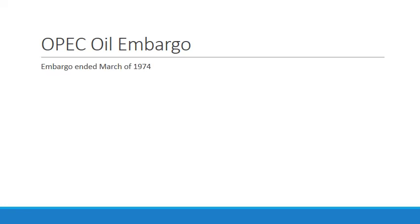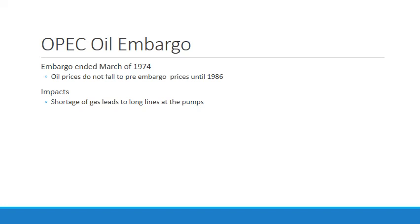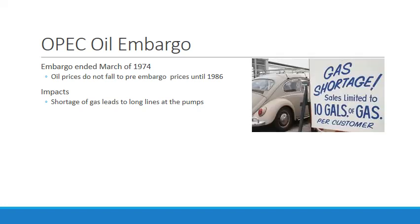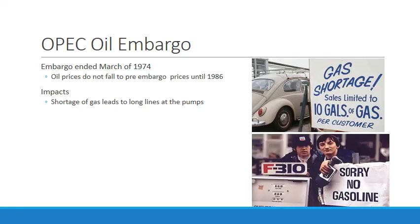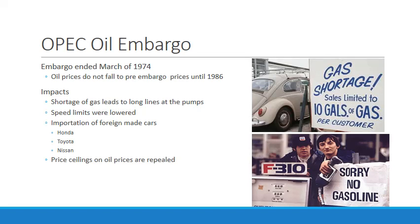The embargo ended in March of 1974, but oil prices did not fall to pre-embargo levels until 1986 — a significant decade-long effect on the United States. Impacts included long lines at the pump, gas sales limited to 10 gallons per customer, and stations posting 'no gasoline' signs. Speed limits were lowered to conserve gasoline, imports of foreign-made cars like Honda, Toyota, and Nissan increased, and the price ceilings on oil prices were eventually repealed — because if price ceilings are repealed, it doesn't matter how expensive it gets, supply will always be available.